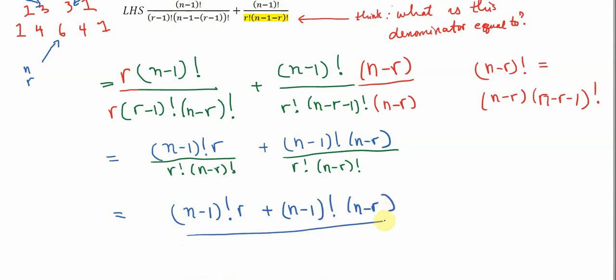All of this over r factorial, n minus r factorial.